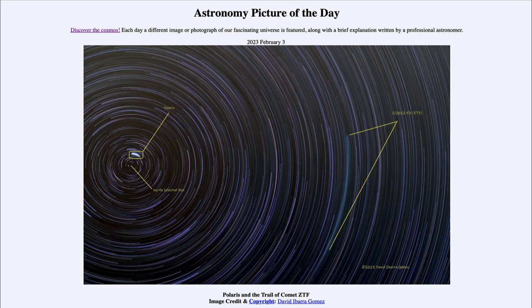That is apod.nasa.gov/apod, and today's picture for February 3rd of 2023 is titled Polaris and the Trail of Comet ZTF. So what do we see here? Well, here we have an image of the northern part of the sky.